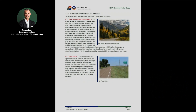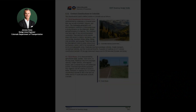The context classifications in this guide help define the geographic location of the area through six categories of contexts, which are C1 through C6, as these are defined through the chapter.